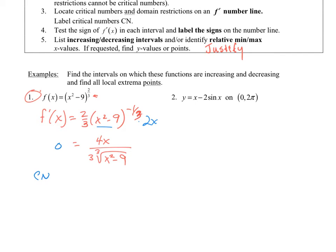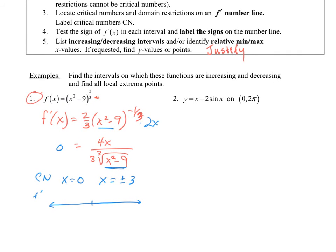Simplifying, I get 4x all over 3 times the cube root of (x squared minus 9) — that's the derivative, with one-third as the exponent, not one-half. To find critical numbers, I set this equal to zero or find where f prime is undefined. The numerator gives zero at x equals zero; the denominator gives undefined at x equals plus or minus three.